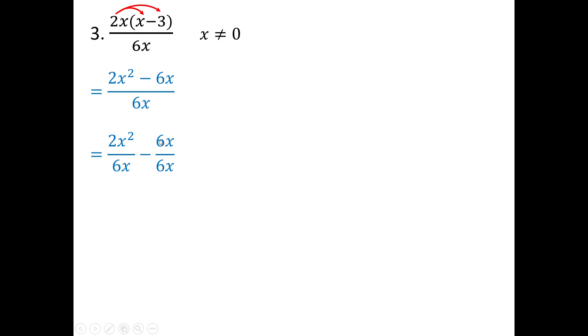So anything over itself is always equal to 1. 6 goes into itself once. Then this first fraction here, I can say 2 over 6 is the same as 1 over 3. And then the x at the bottom will cancel with one of these at the top. So I'm just left with basically 1x over 3 minus 1.